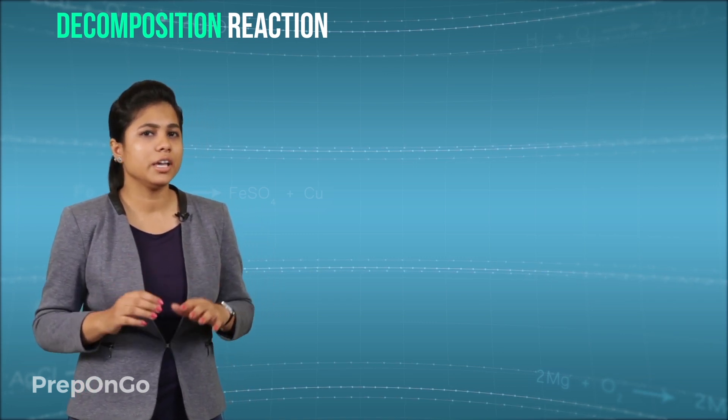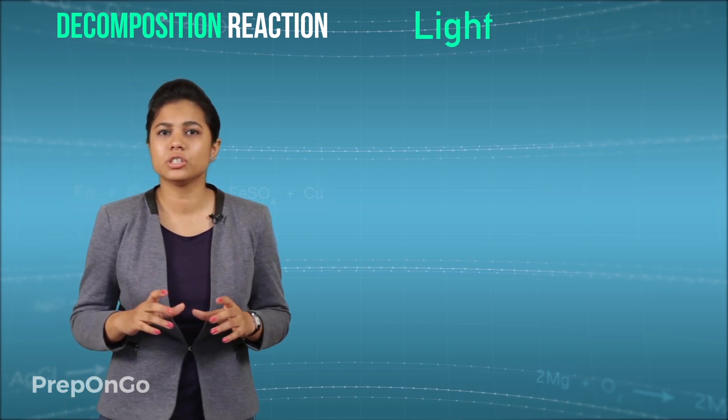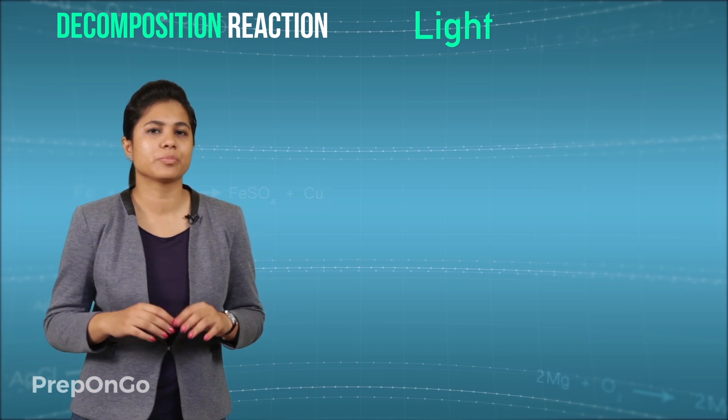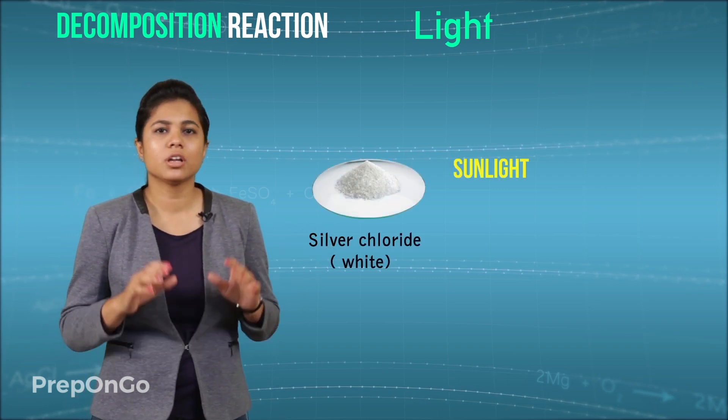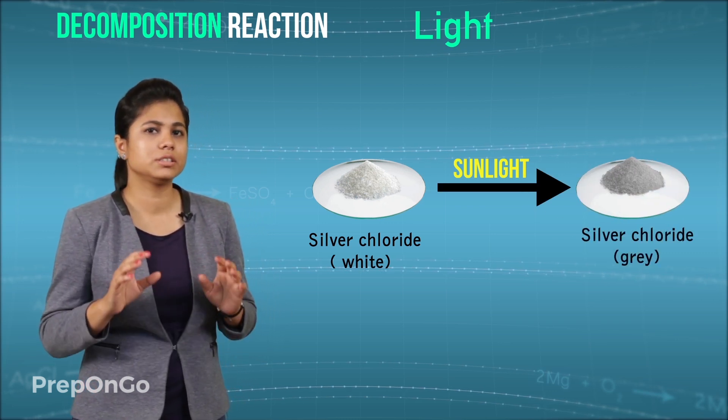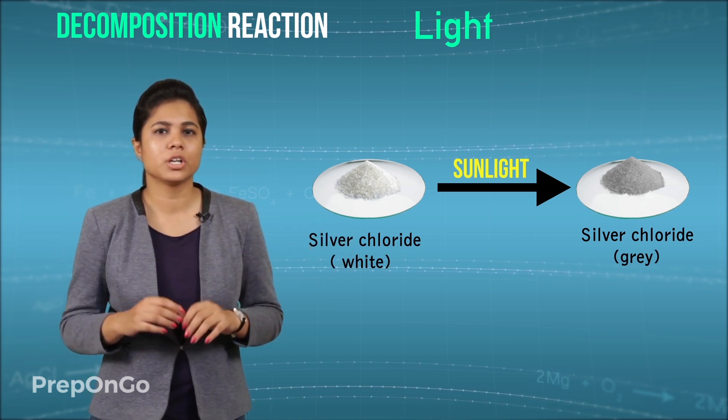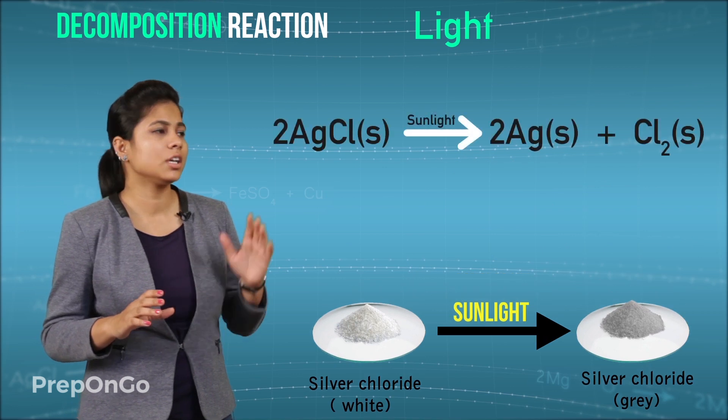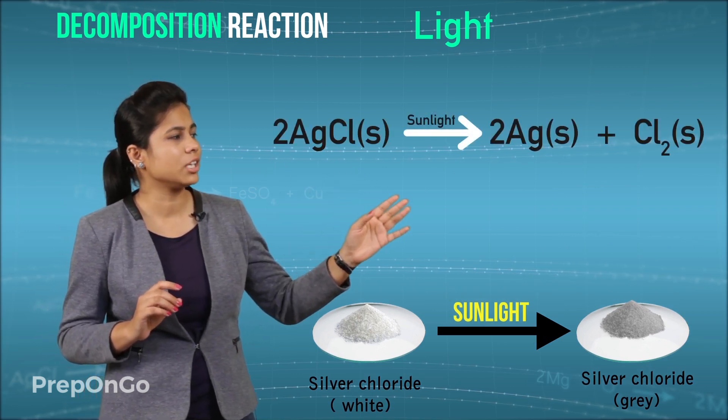The third agent is light. Let's see the decomposition due to sunlight with an activity. You put silver chloride in sunlight for some time. You will see that the white colored silver chloride has turned gray. This is because the silver chloride has decomposed into silver and chlorine. So the reaction is silver chloride in the presence of sunlight gets decomposed into silver and chlorine.